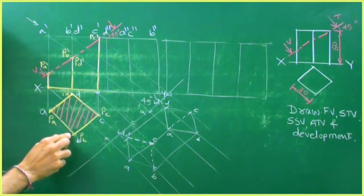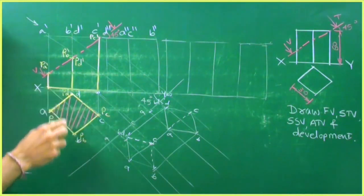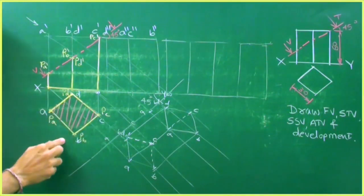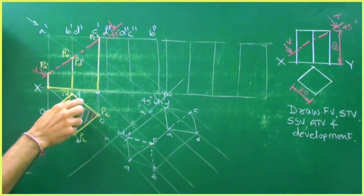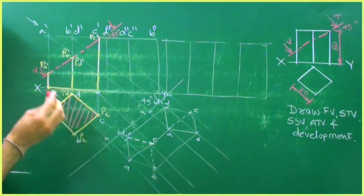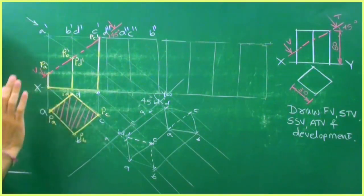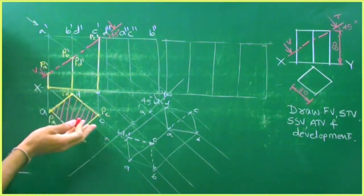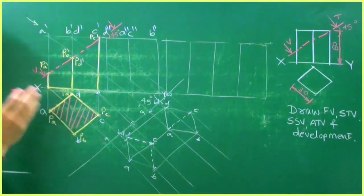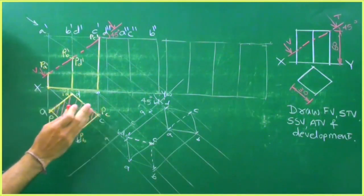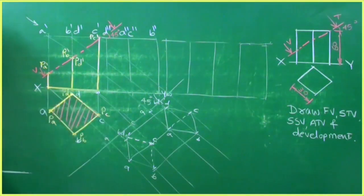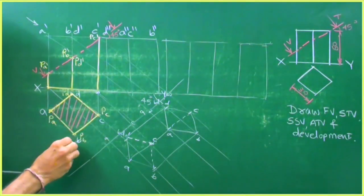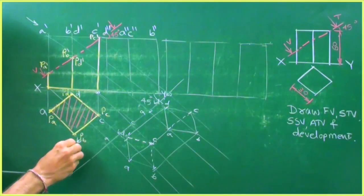In this case especially, we avoid hatching at 45 degrees — otherwise it looks like a design. So that's why we avoid drawing at 45 degrees. This is the sectional top view.